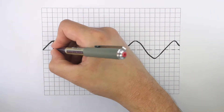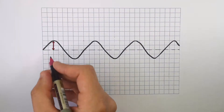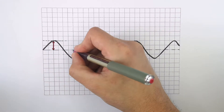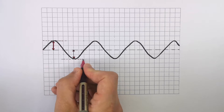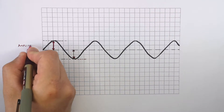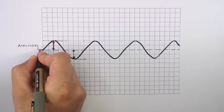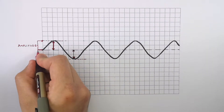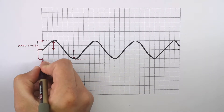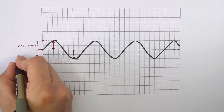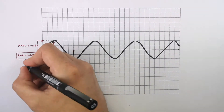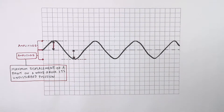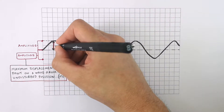This here is the wave's amplitude. What I've drawn is an arrow showing the maximum displacement from the undisturbed position — which is the dotted line — to the maximum displacement of the wave. I've drawn the amplitude from the undisturbed position to the peak of the wave, and also from the undisturbed position to the trough of the wave. Amplitude is the maximum displacement of a point on a wave from its undisturbed position, and the unit of amplitude is meters.